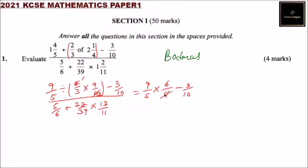So we simplify here, we will be able to get, this is equals to 6 over 5, minus 3 over 10, that is the numerator.